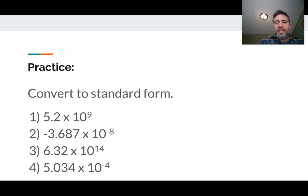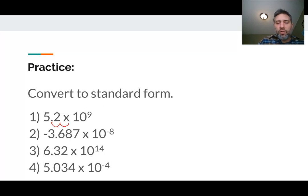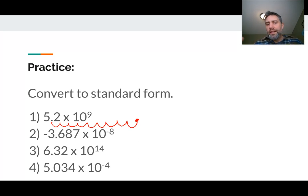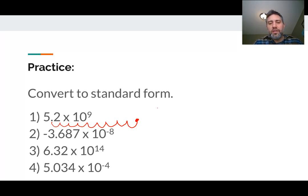Hopefully you're back with us now. So 5.2 times 10 to the ninth — what that means is you're going to take this decimal point and move it over nine times: 1, 2, 3, 4, 5, 6, 7, 8, 9. That's where the decimal point is going to go, because we're multiplying 5.2 by 10 nine times. We can fill all those spots in with zeros.